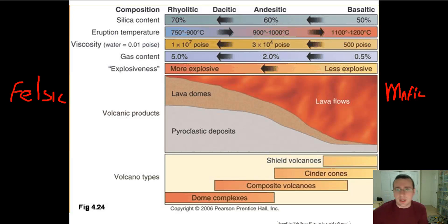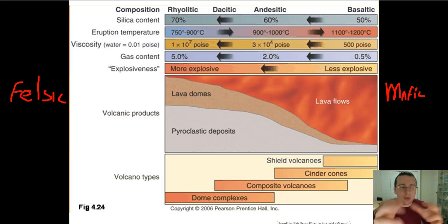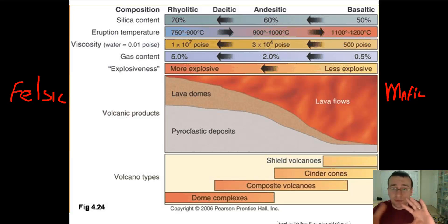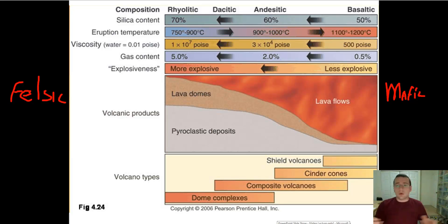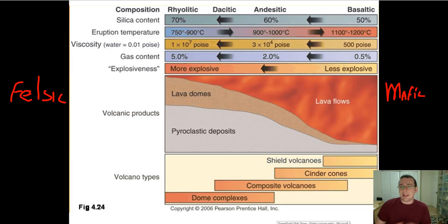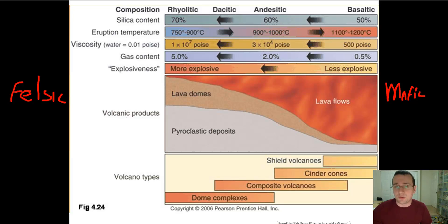Now, there are two major categories for lava, and it's more like a spectrum. Depending on the volcano and the actual eruption, sometimes the volcanoes will shift from one to the other. You're going to be a little more mafic or a little more felsic — somewhere on the spectrum between one side or the other. Things on the left side of this picture represent the felsic lava and felsic eruptions, while things on the right side represent the mafic eruptions from mafic volcanoes.